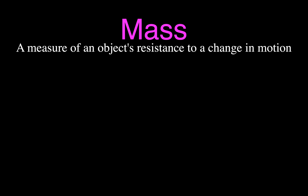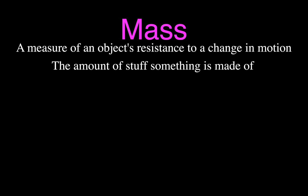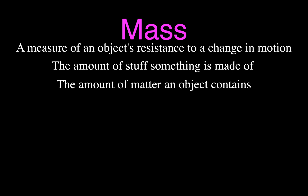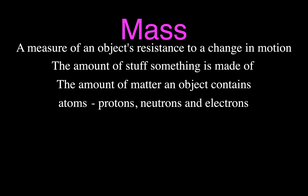What is mass? Well, there are maybe two or three different definitions you could use. Maybe the most academic one is a measure of an object's resistance to change in motion — the more mass you have, the harder it is to change your motion. Sometimes people say it's the amount of stuff something is made of. The definition I like to use is: it's the amount of matter that an object contains. The more massive you are, the more matter you have. And what is all that matter made of? The building blocks of matter — atoms — which include protons, neutrons, and electrons.